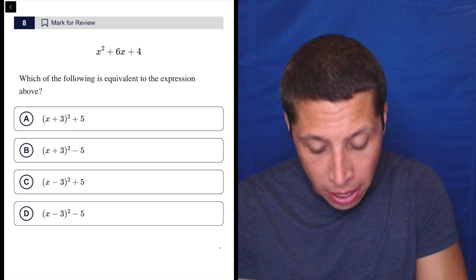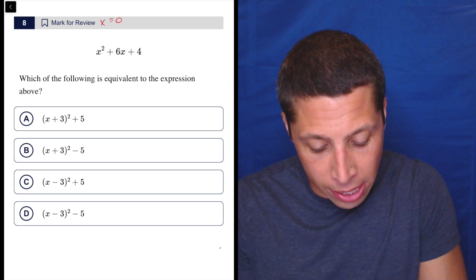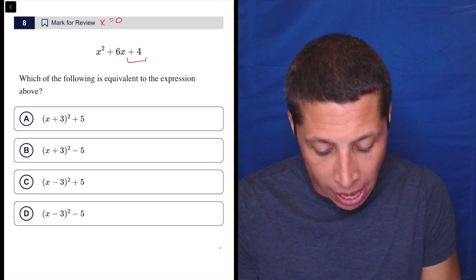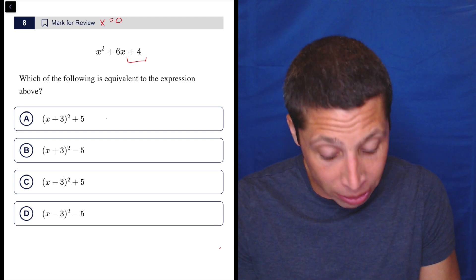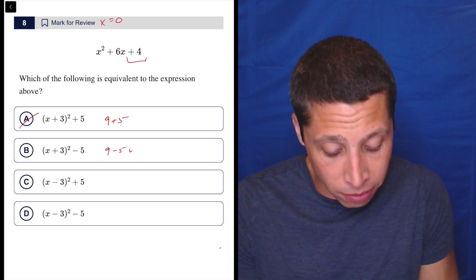So I would do what I always do. I pick x is zero and I'd say, okay, that means that this equation is just going to be the four. So I'm looking for a four now in the answer choices. So putting in zero, I'd get in choice A, three squared is nine plus five. That's not four. This would be nine minus five. That is, but we got to be careful.